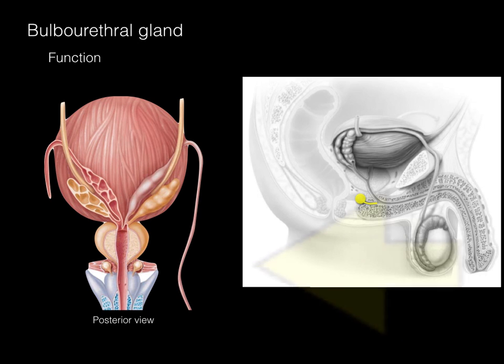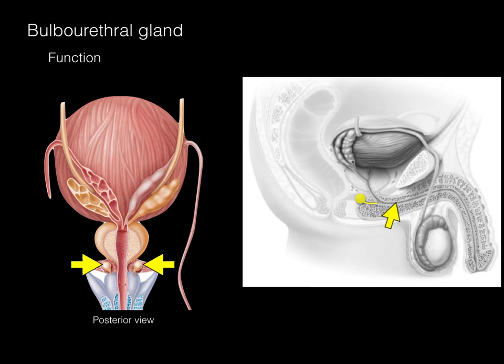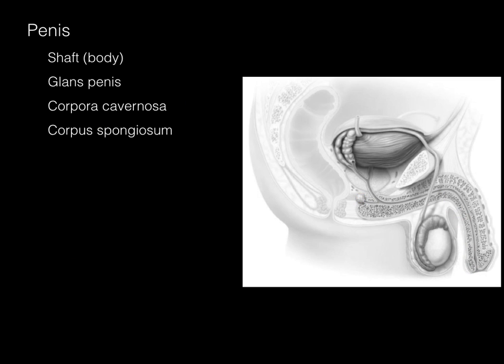In this posterior view, we see the two paired bulbourethral glands within the urogenital diaphragm. During ejaculation, the secretion coats the inside of the urethra in preparation for ejaculation.